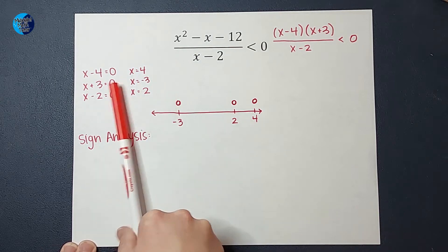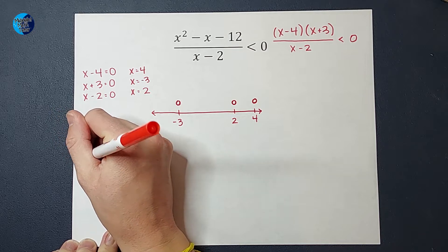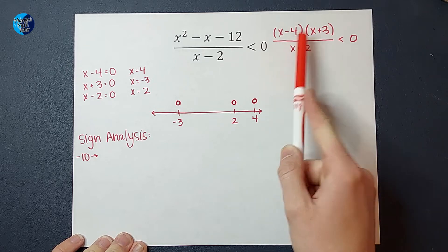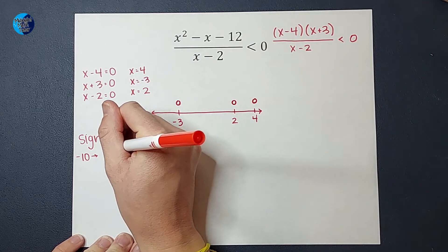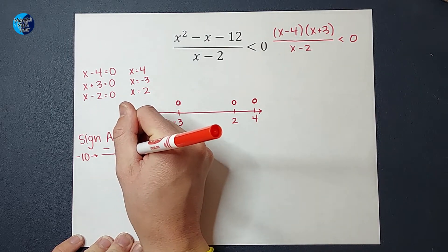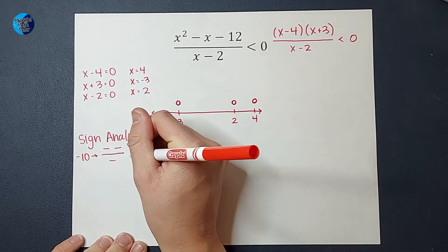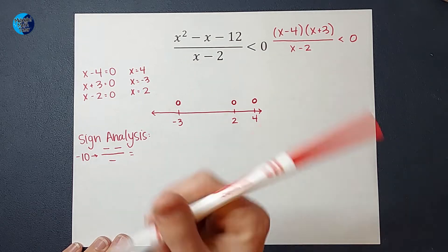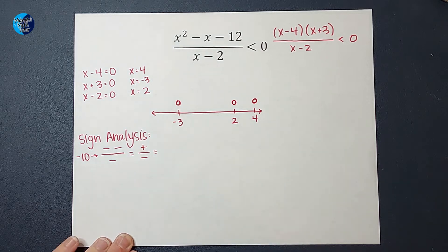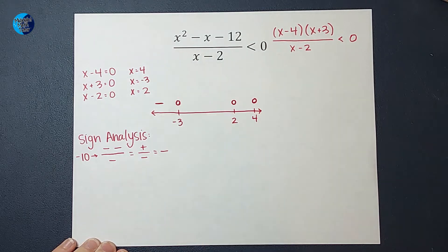I'm going to pick a number less than -3. Let's pick -10. When I plug in -10 for x, on top I get -10 - 4, which would give me a negative. -10 + 3 would also give me a negative on top. And on bottom, I would have -10 - 2, which is also negative. So on top, I'd have negative times a negative, which is positive. On bottom, I have that negative. Positive divided by a negative is negative. So this region to the left of -3 is negative.